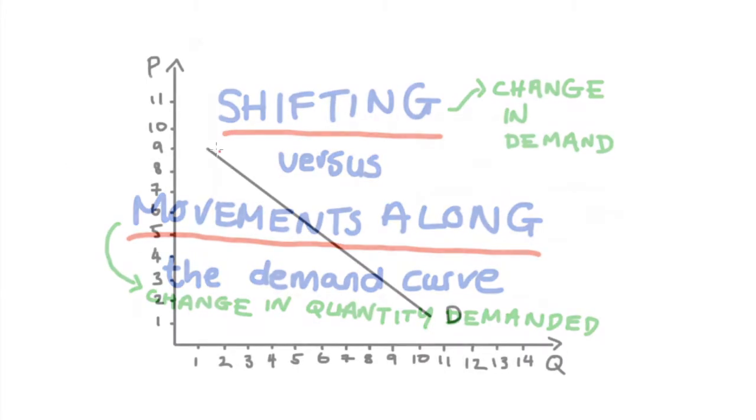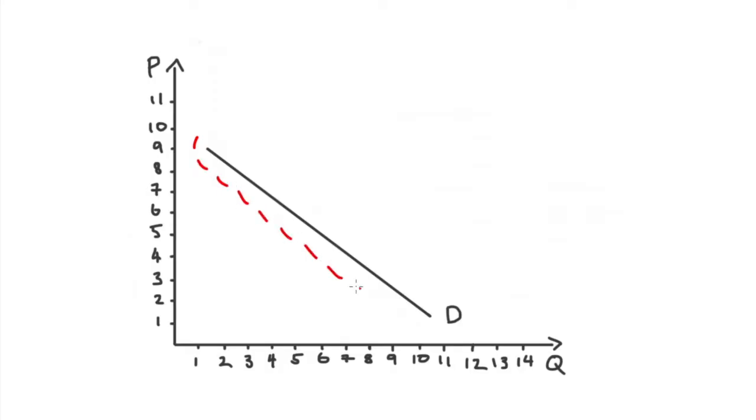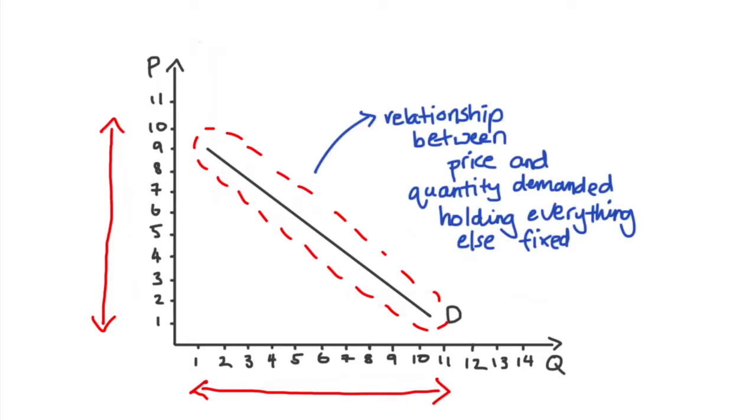Let's focus on movements along first. Here's our demand curve. To understand movements along, we have to understand what this demand curve is doing, which is telling us a relationship between all the possible prices that a good can take and the quantity demanded at each one of those prices, and we are holding everything else fixed.